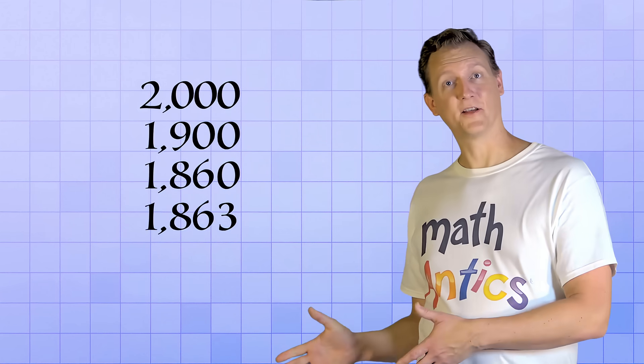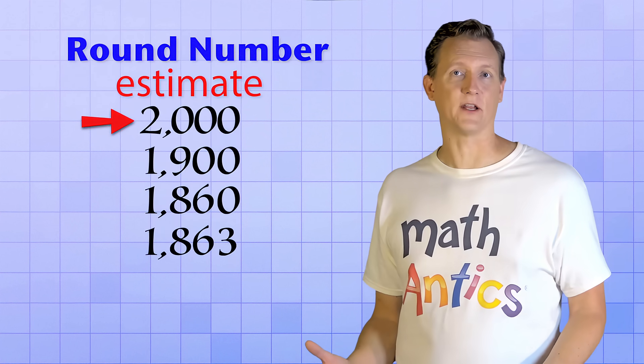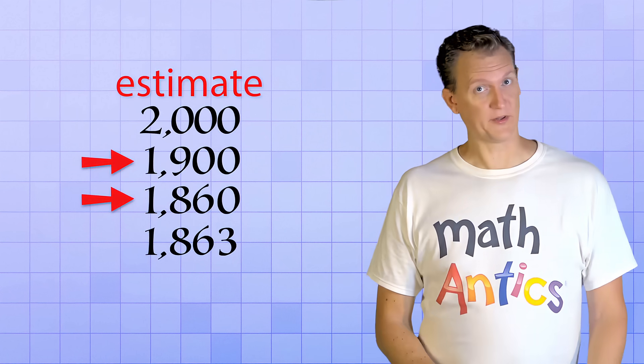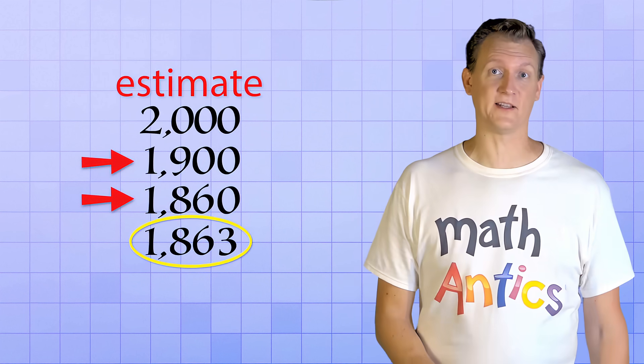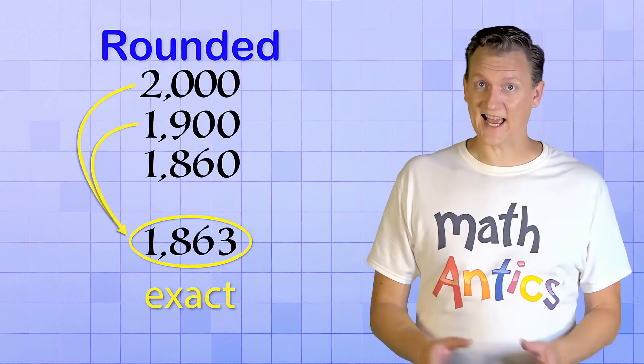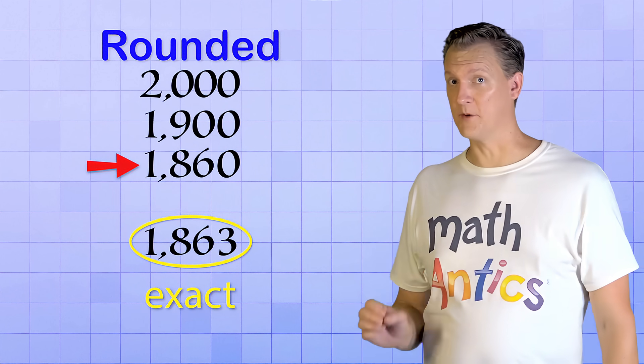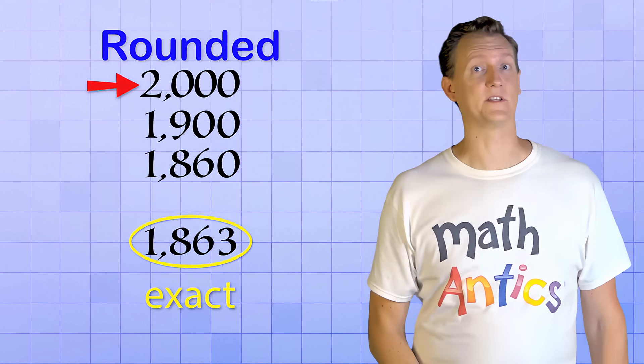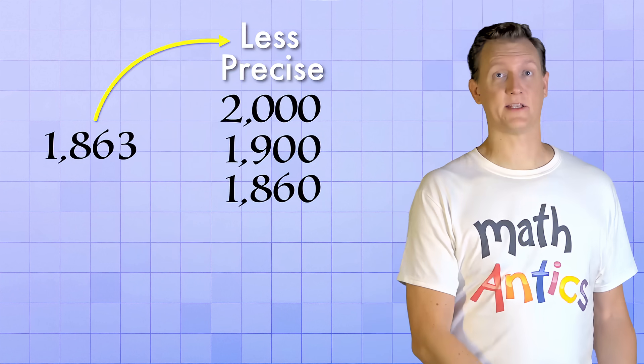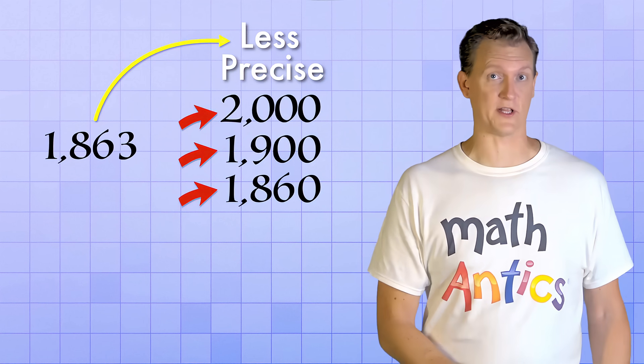See what I did there? At first, the number used to represent the students at high school was a round number. It was a good estimate of how many students there were, but it wasn't exact. The next two numbers were a little closer to the truth, but they were still estimates. Only the final number represented the exact amount of students at the school. All three of the estimates are rounded versions of the exact count, but they have different levels of precision. 1,860 was the most precise estimate and 2,000 was the least precise estimate.